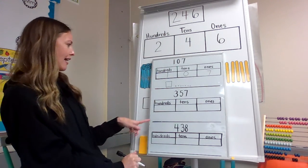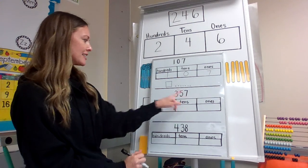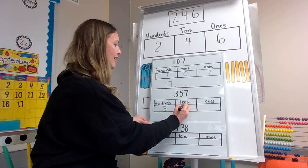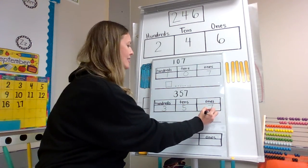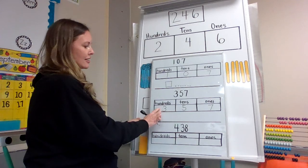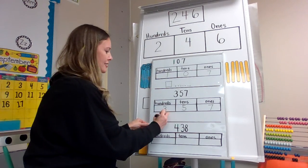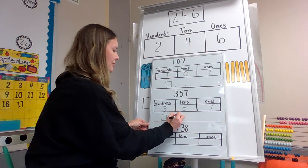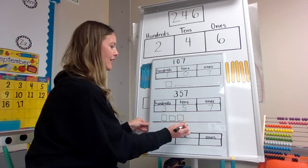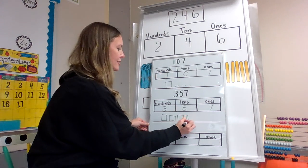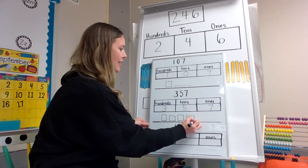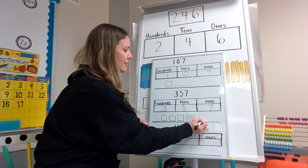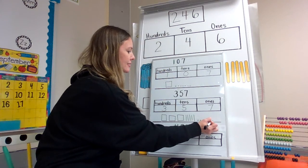For the next one, we have 357 — so a three in the hundreds place, five in the tens place, and a seven in the ones place. So we need to make three hundreds: one, two, three. And then I'm going to make five tens: one, two, three, four, five. And then seven ones: one, two, three, four, five, six, seven.